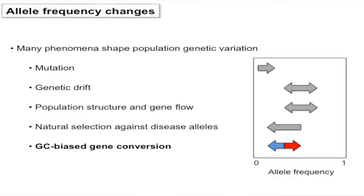There's a wide variety of forces that can influence population genetic variation. You can think about allele frequency — this axis goes from low to high. There's mutation, the raw supply of variation; genetic drift, which can change allele frequencies; population structure with different allele frequencies in different populations; and natural selection — if it's a disease allele, it'll be pushed down to a lower frequency. But there's a phenomenon not everybody's aware of that also plays a role: GC-biased gene conversion. It can act in two ways — pushing alleles to lower frequency, or increasing the frequency of some alleles.